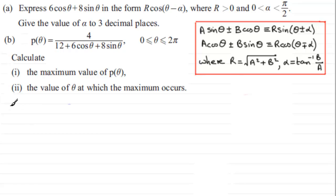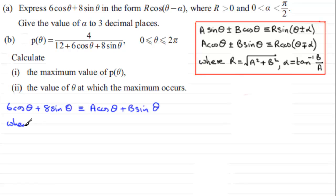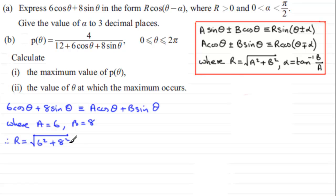So, 6cosθ + 8sinθ matches the form a·cosθ + b·sinθ, meaning a = 6 and b = 8. To find r, we use r = √(a² + b²), so r = √(6² + 8²) = √(36 + 64) = √100 = 10. Notice I'm not writing ±; we always take the positive value since r is greater than zero.